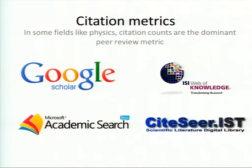I'm going to be talking about those two use cases — the discovery use case and the ranking use case — in the context of a variety of peer review metrics. So citation metrics — these are ones that have emerged online relatively recently. There are a number of services like Google Scholar, Microsoft Academic Search, and Web of Knowledge that have focused on data mining the literature. In some fields like physics, a global citation count for all inbound citations to your research portfolio has emerged as the dominant peer review metric.